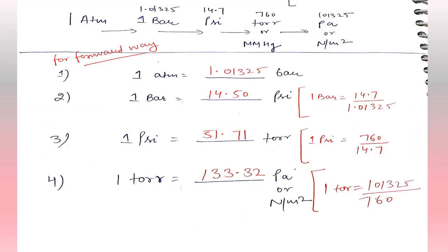Suppose we have to convert 1 atm to bar, going in the forward direction. We know that 1 atm is equal to 1.01325 bar.